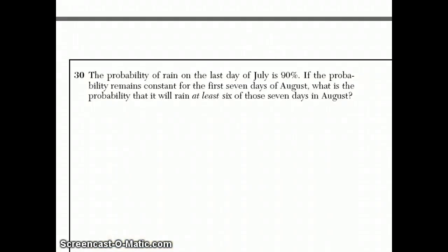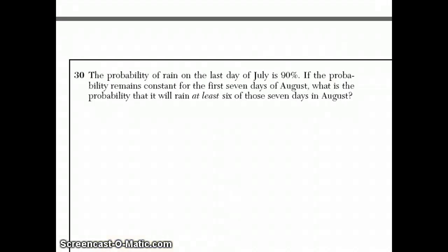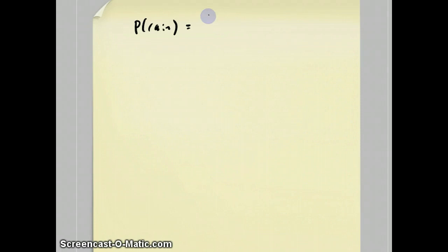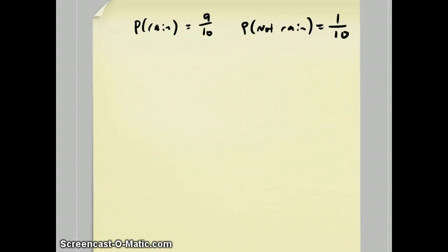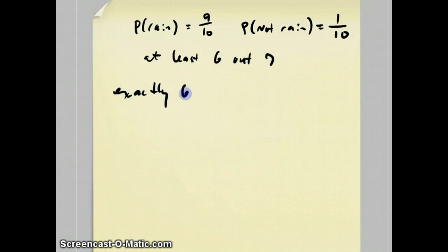So we're talking about seven days. The probability of rain is 90 percent — I'm going to write it as a fraction, you can do a decimal if you want — which means the probability of not raining is one minus that, which is one tenth. Now over a seven-day period, at least six out of seven is really two questions in one: the probability of getting exactly six, or — for 'or' you add the two probabilities together — getting exactly seven days of rain.